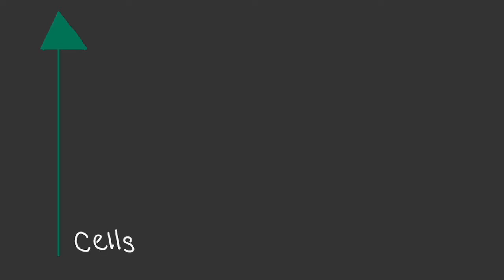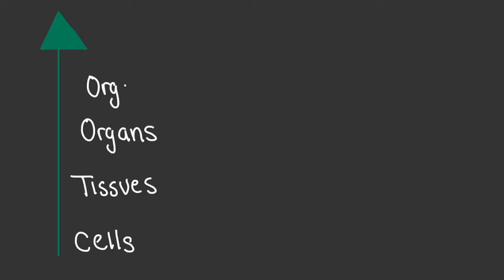If we have multiple cells that are grouped or combined together, we generally refer to those as tissues. With multiple tissues together that have a unique or specialized function, we refer to those as organs. With multiple organs that function together, we generally refer to those as organ systems. And a combination of multiple organ systems or body systems we refer to as an organism.